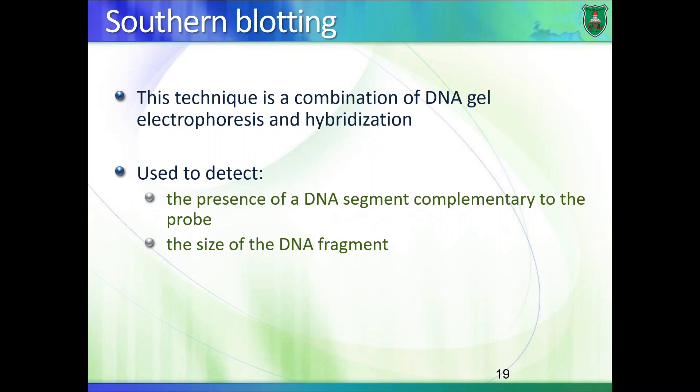This technique, southern blotting, is a combination of two things: DNA gel electrophoresis and the hybridization-based technique known as dot blotting. The purpose of southern blotting is to detect if there is a DNA segment or fragment that contains a sequence that is complementary to a probe.